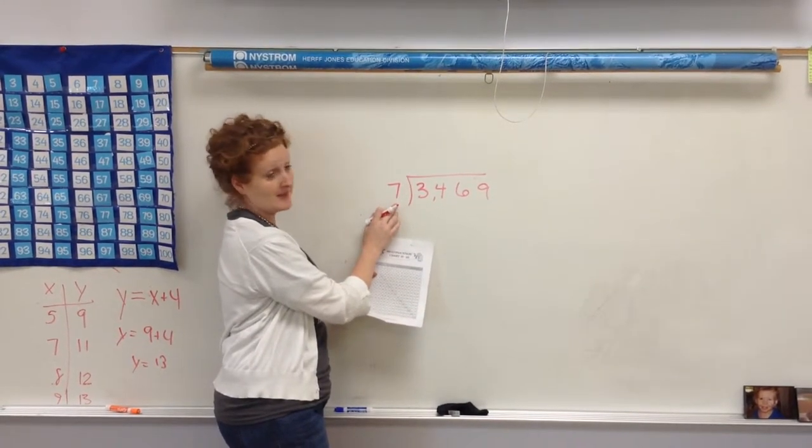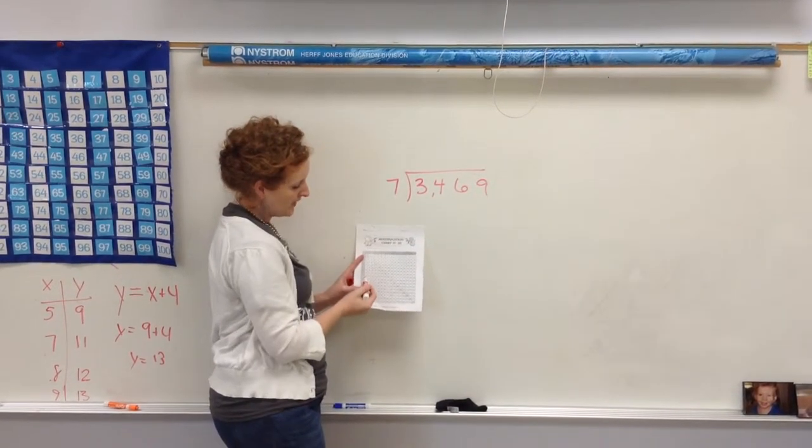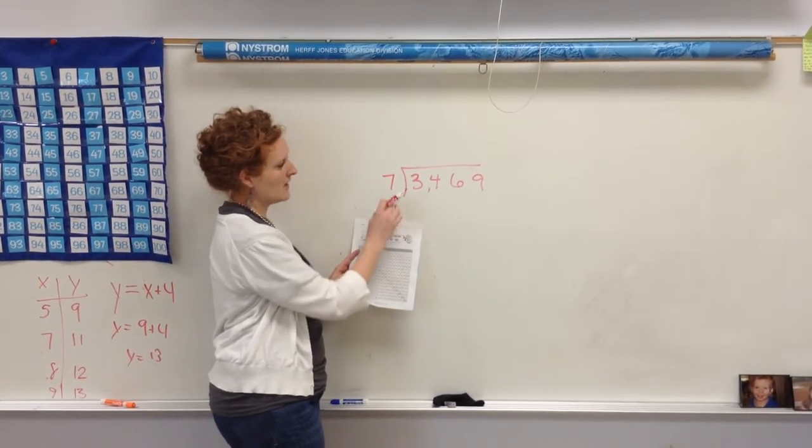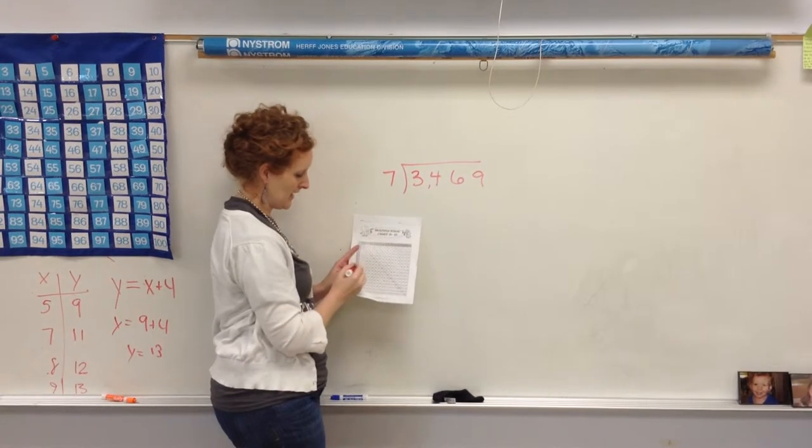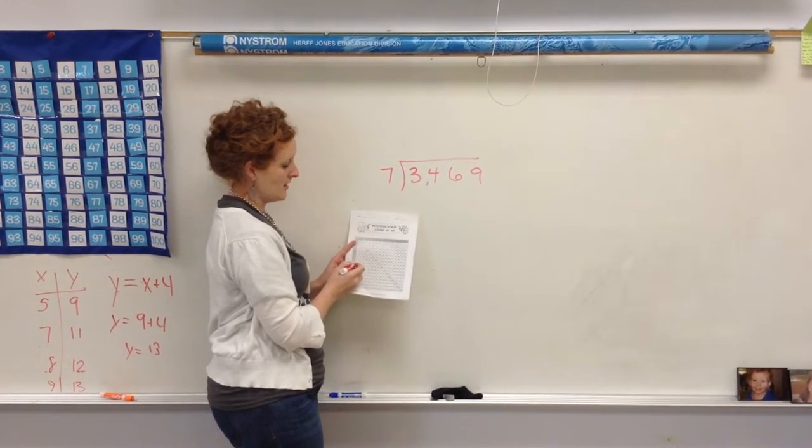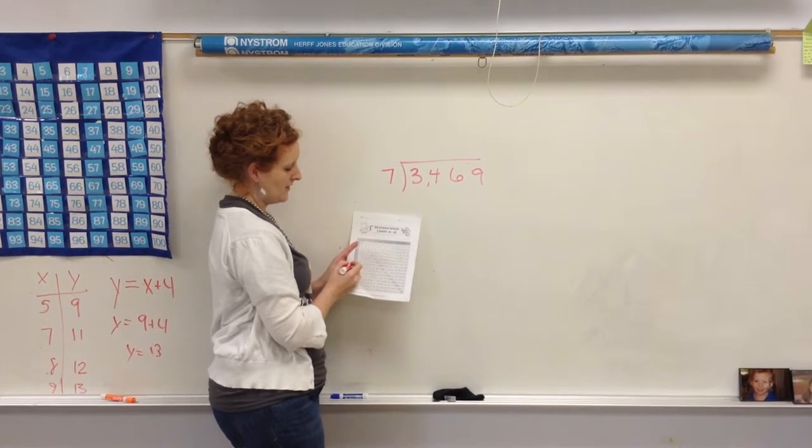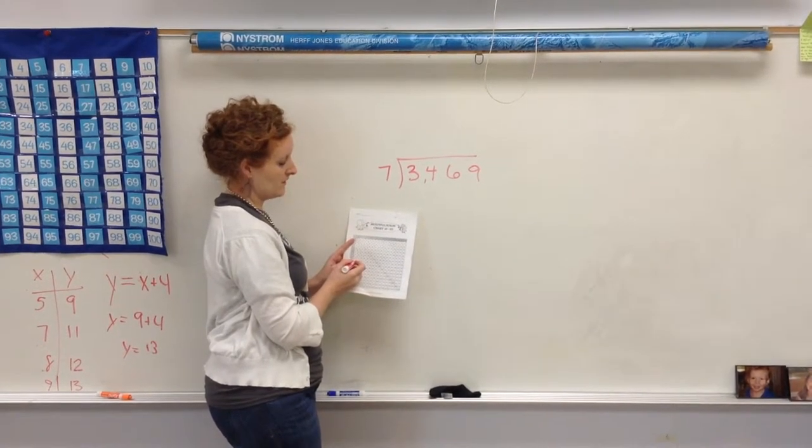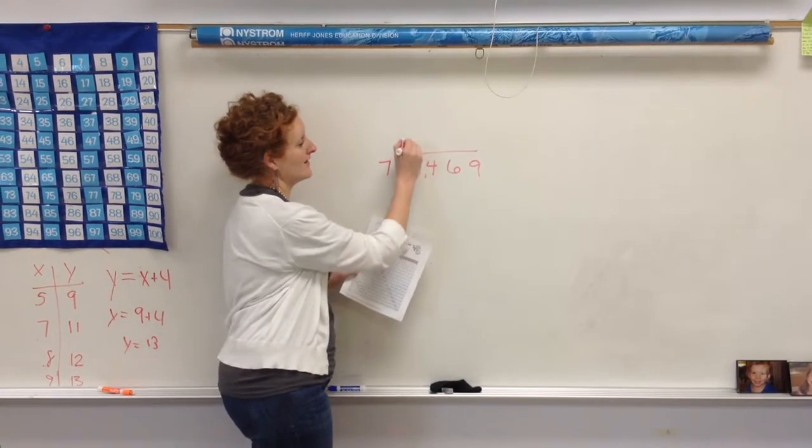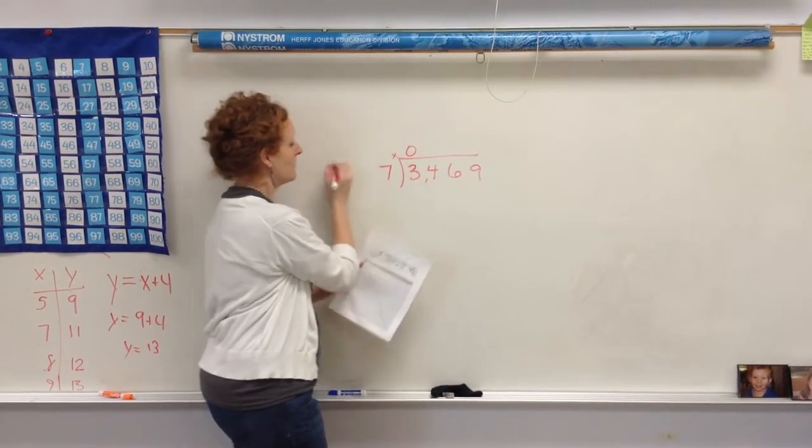So the first thing, if my divisor is 7, I'm going to go on my multiplication chart to my row of 7. I'm going to ask, okay, how many times will 7 go into 3? And I start going down. As soon as I go over 3, I've gone too far. So 7, as soon as I get to 7 times 1, I'm over. That's 7, so that's too big, so that means we'll go into 0 times.